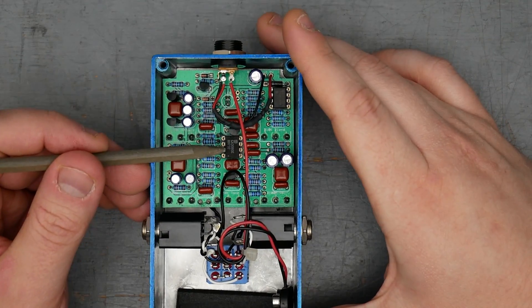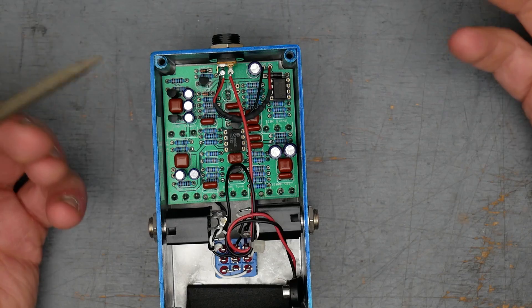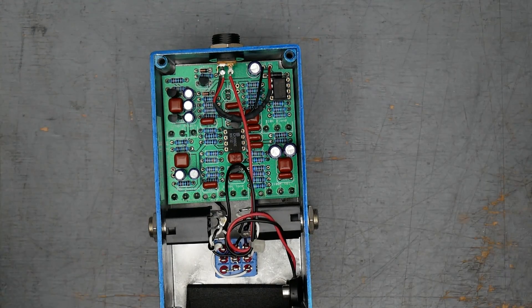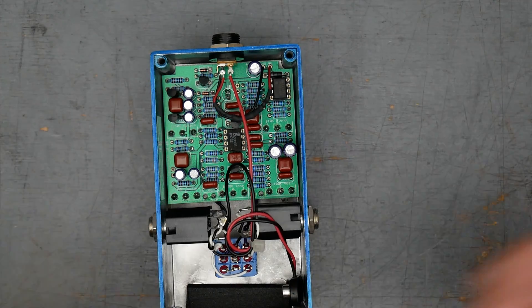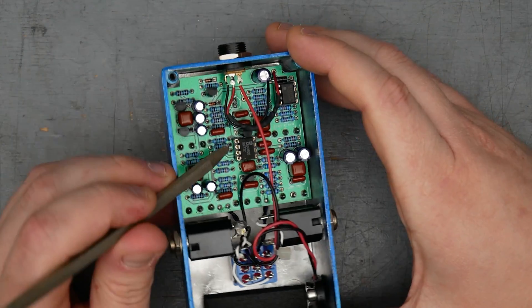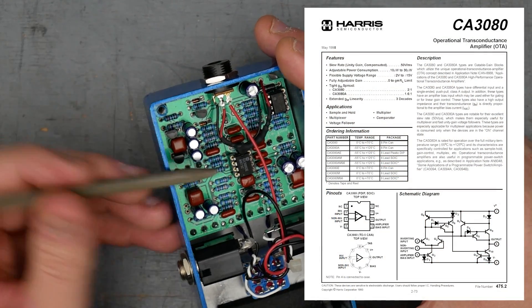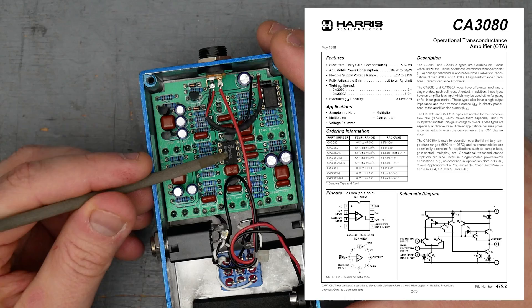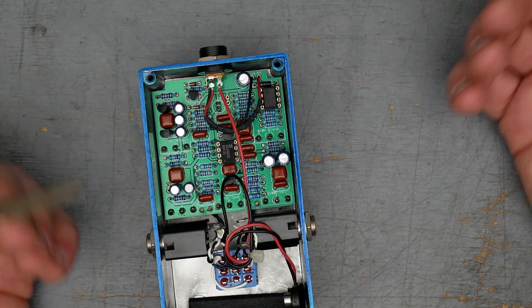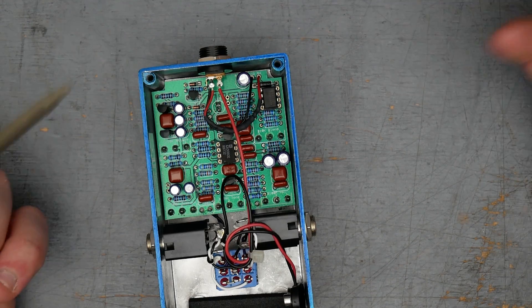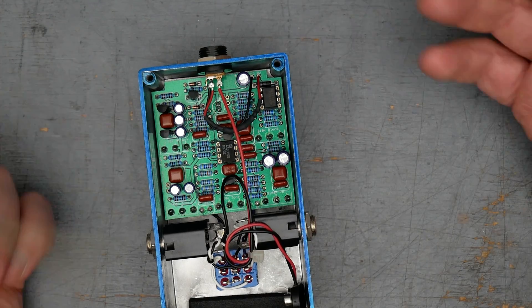So right at the heart of the effect, we have what is the heart of the Dynacomp and subsequent effects based on that compressor, which is an OTA transconductance amplifier. This one specifically the CA 3080 E made by Harris. The CA 3080 is as far as I know the first commercially available operational transconductance amplifier, which is what OTA is. It was originally designed by RCA.